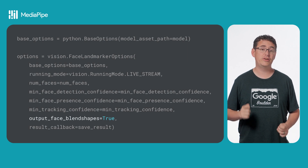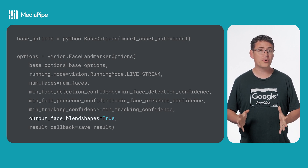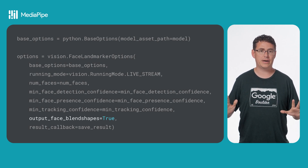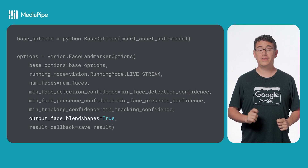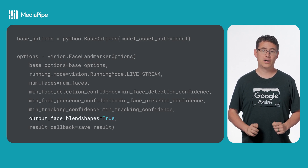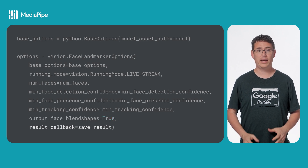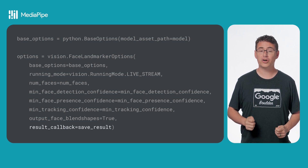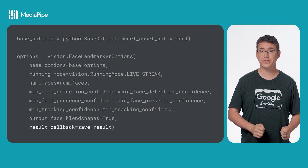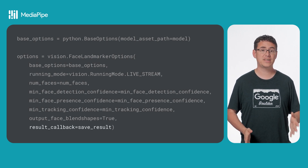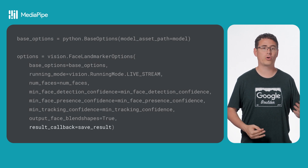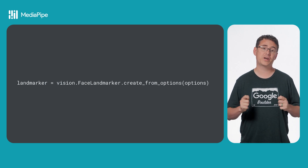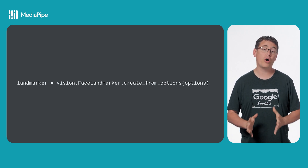Along those same lines, if you don't need to know about blend shapes — the model that determines facial gestures from landmarks — you can simply skip that step and only get landmarks. This gives you less information but works faster, so it really comes down to what you need for your project. The final option is the result callback. Because the camera live stream works asynchronously, you will need a callback function for receiving results once they've been processed. If you're using image or video running mode, you can skip this part. After all of that, you can create the landmarker object you'll use in your app to do all of the machine learning inference.